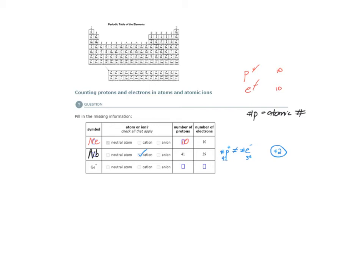To finish this part of the problem, what we must do is indicate that this is an ion by taking the charge of this ion, which is plus 2, and placing it as a superscript in the top right corner above the element symbol.